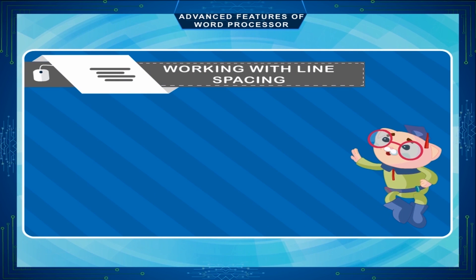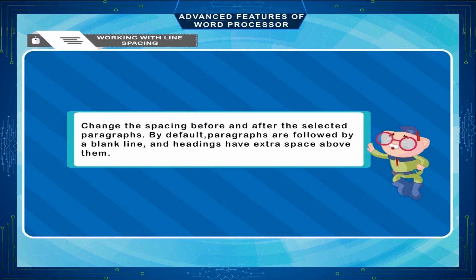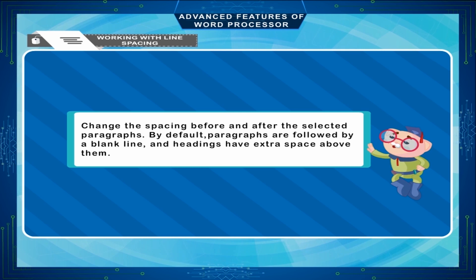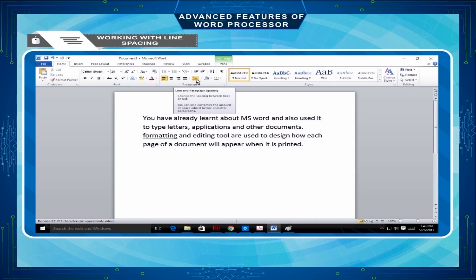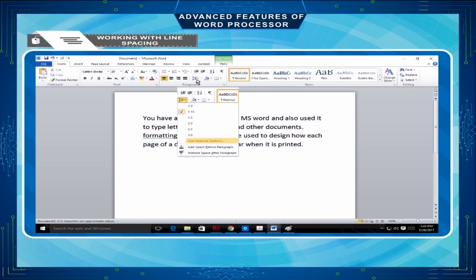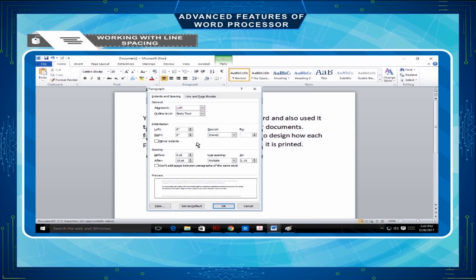Working with Line Spacing. Change the spacing before and after the selected paragraphs. By default, paragraphs are followed by a blank line and headings have extra space above them. Select the paragraph. On the Page Layout tab, in the Paragraph group, click on the arrow next to Spacing Before or Spacing After and enter the amount of space required.